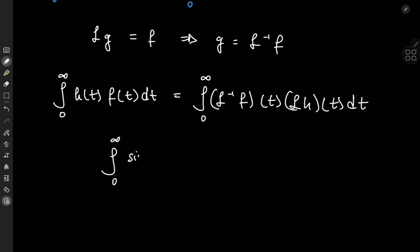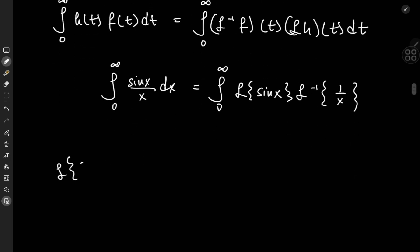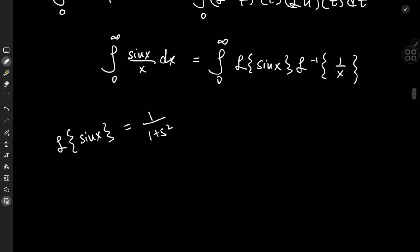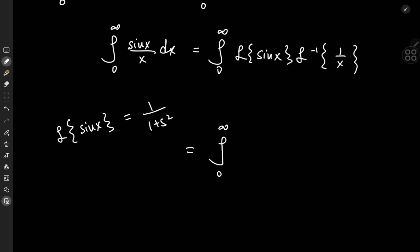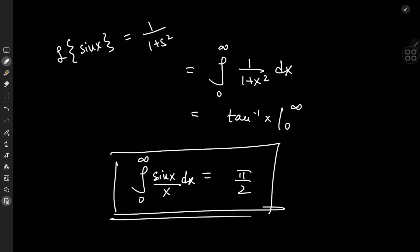We have the Dirichlet integral — the integral of sin(x)/x from 0 to infinity. Using our trick, we write this as the integral from 0 to infinity of the Laplace transform of sin(x) times the inverse Laplace transform of 1/x. The Laplace transform of sin(x) is 1/(1+s²), renaming the variable back to x. The inverse Laplace transform of 1/x is just 1. So we have the integral of 1/(1+x²) from 0 to infinity, which equals arctan(x) evaluated from 0 to infinity, giving π/2 minus 0, confirming the Dirichlet integral equals π/2.